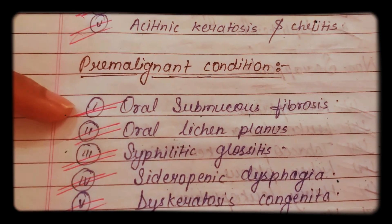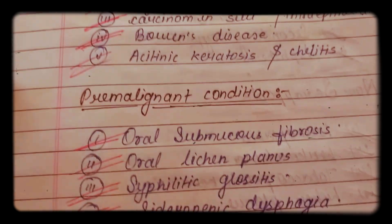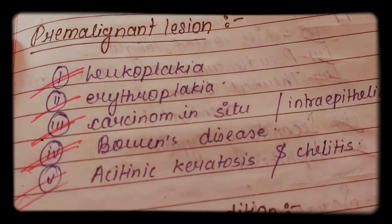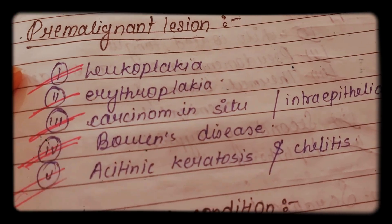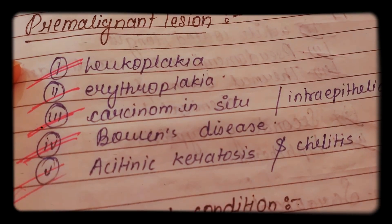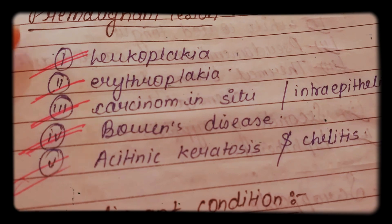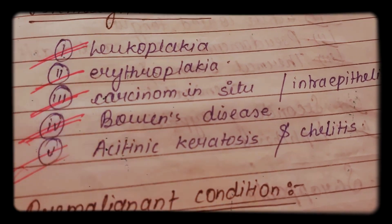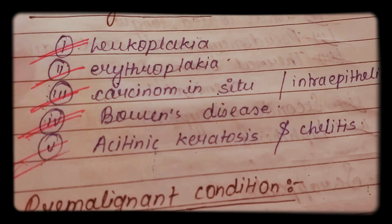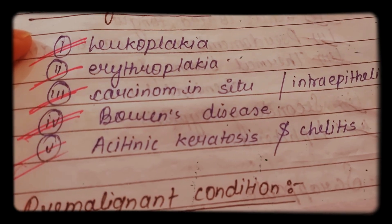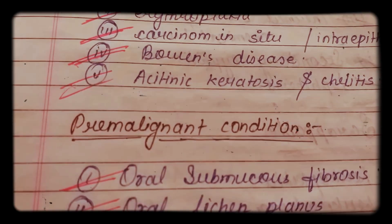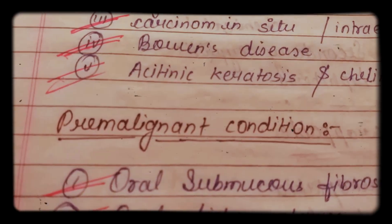Among pre-malignant lesions, the most important for exam and viva point of view are leukoplakia and erythroplakia. Okay, bye.